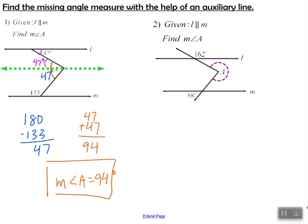Now take a look at problem number two. Again, we're given that line L is parallel to line M, and we have to find the measure of angle A. The diagram is slightly different than the one in example one. I want you to go ahead and pause, give this problem a try, and then check back with me and see how you did.